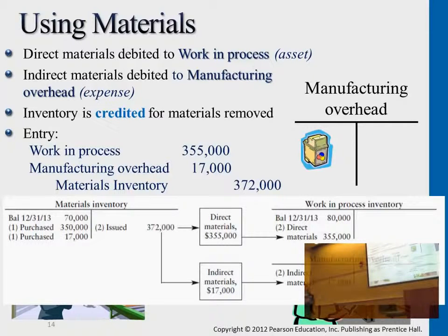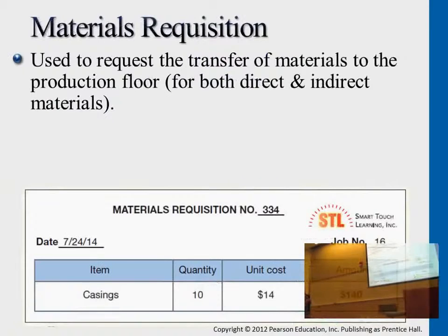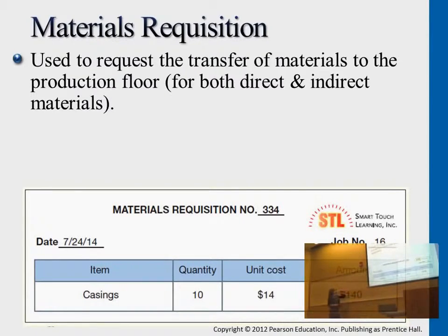We'll incur labor cost, and we'll take care of that a little bit later. The next slide is just letting you know what exactly happens in the business. Usually when the production team requests the materials and we turn it into work in process, into a direct manufacturing overhead cost category, we have materials requisition forms for the lab.